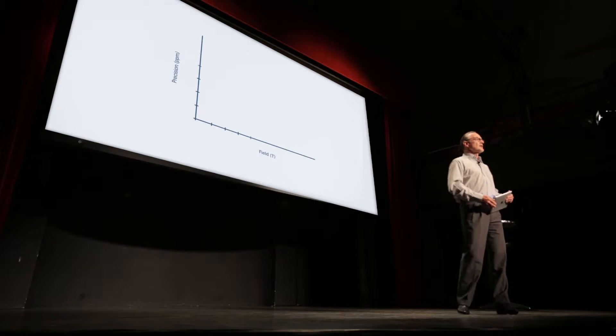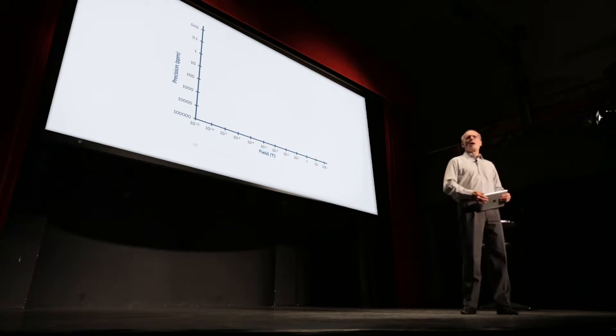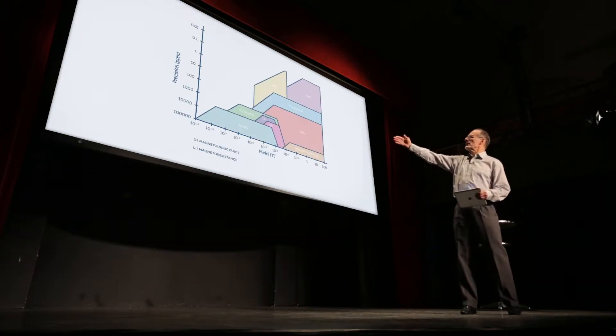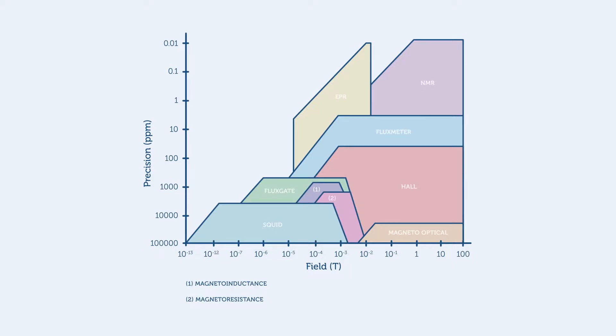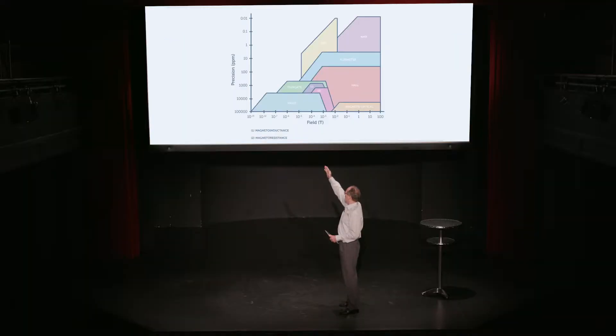When we hear the term magnetometer, or the older term Gauss meter, most of us are thinking about a Hall magnetometer. And it's true that Hall magnetometers occupy a very important place on this diagram where we're categorizing all the different field measurement techniques on the basis of the range that they cover and the precision that they give you.